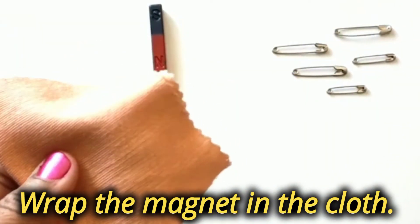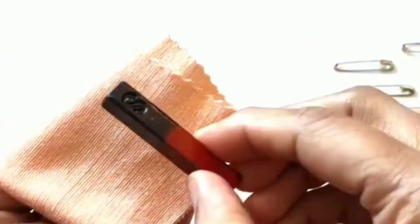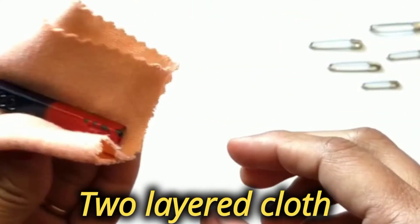Let us wrap the magnet in the cloth. Here you can see the cloth is folded, so it is a two-layered cloth.